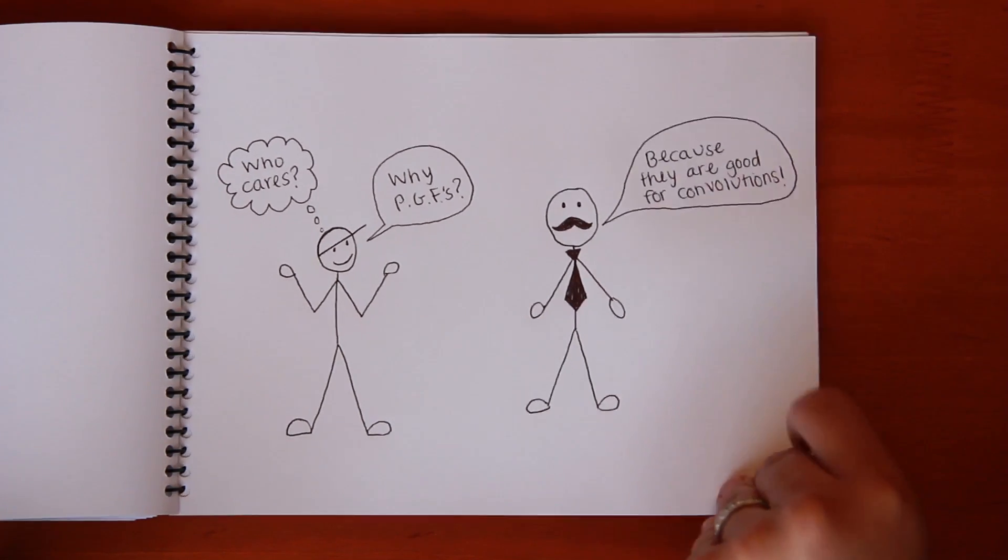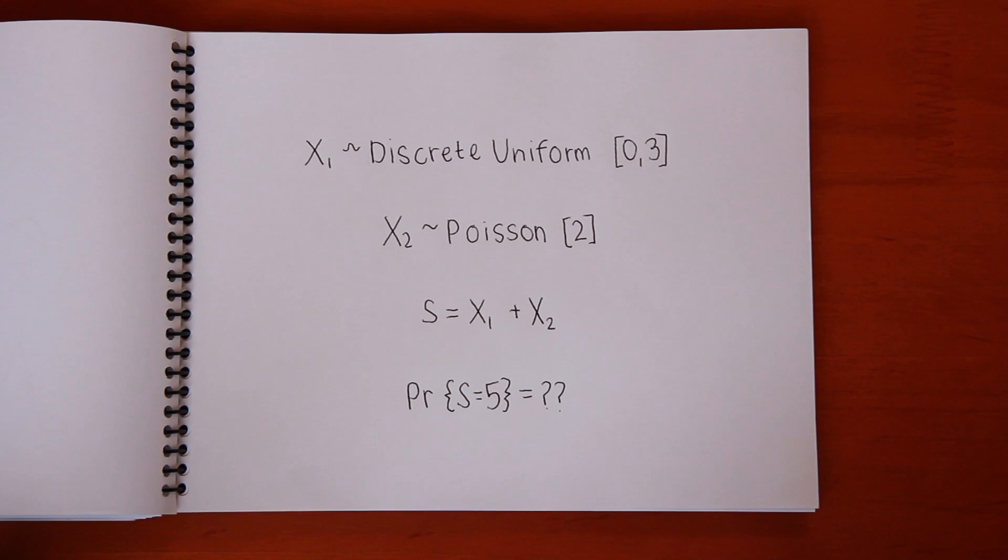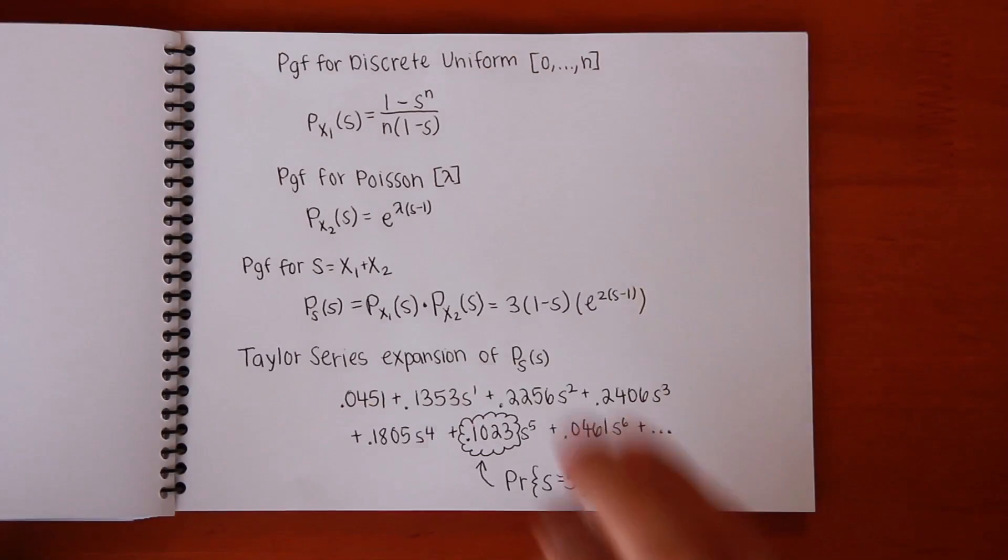Let's say we want to find the probability that the sum of a discrete uniform random variable X1 on the interval 0 to 3 and a Poisson random variable X2 with expectation 2 equals 5. Finding this probability mass function is really quite difficult.